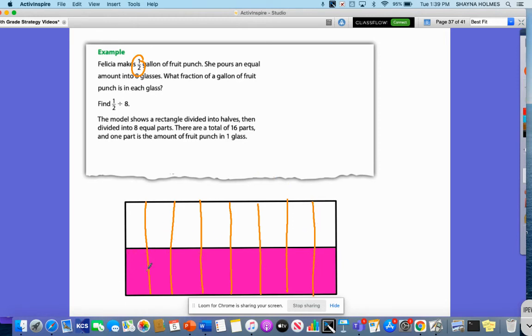Okay, so imagine that these are eight glasses. This would be one, two, three, four, five, six, seven, and eight. But I do have a new denominator, which will give me a new fraction.